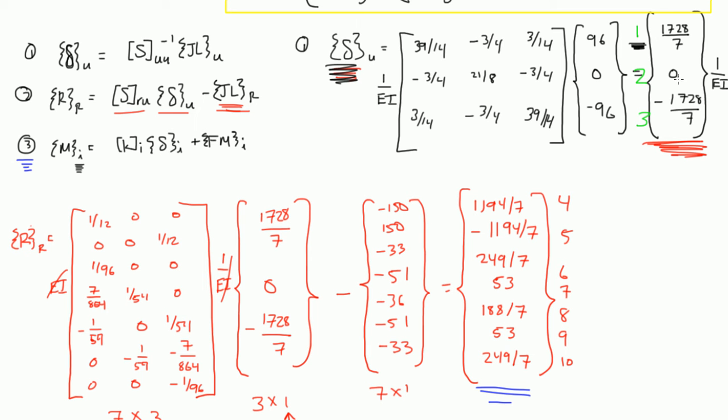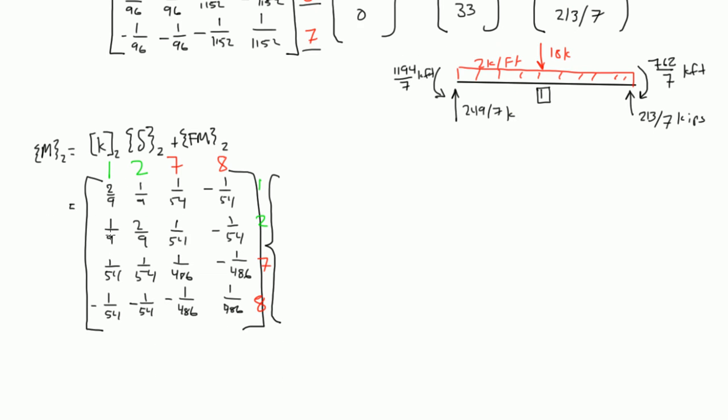2 and 3 are 0 and negative 1728 over 7. Alright, so we have EI here. I keep forgetting to put that. And then we have 1 was 1728 over 7, and then 2 was 0, and then 7 and 8 are restrained degrees of freedom. They don't have any deformations because they can't move. So those become 0.